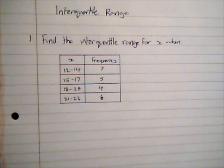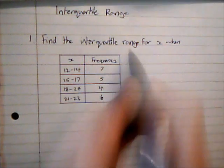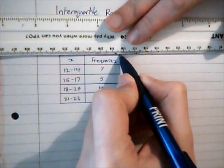In this video, we're going to look at how to calculate the interquartile range from a grouped frequency table. In many ways, this is similar to how we calculate the median, and there's a previous video on that showing how to do it by interpolation, and it's interpolation we're going to use again here.